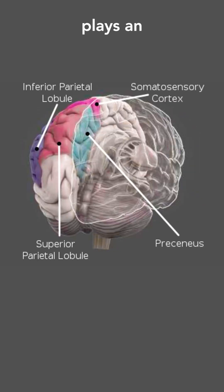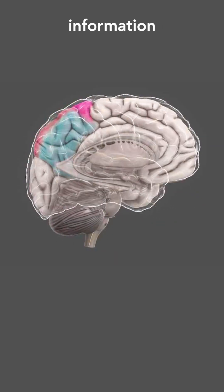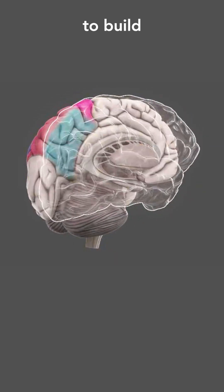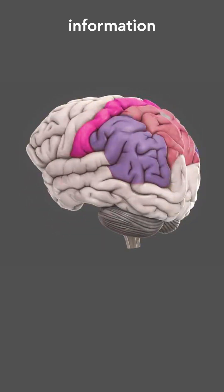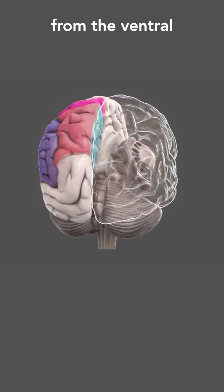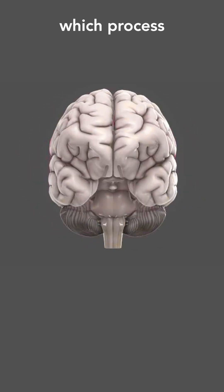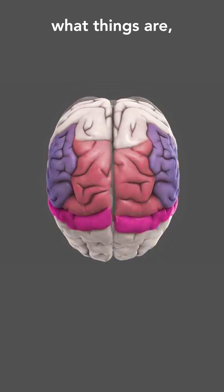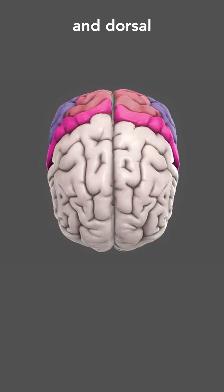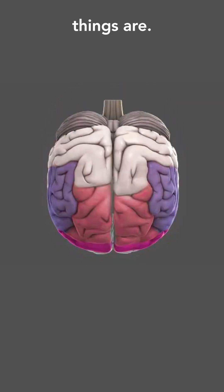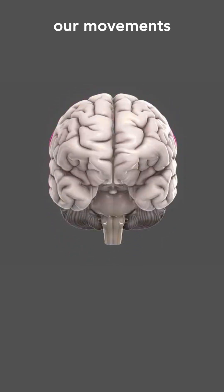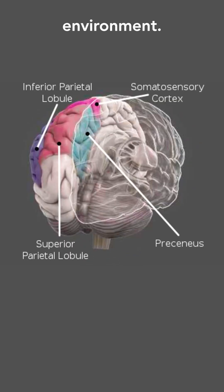The parietal cortex plays an important role in integrating information from different senses to build a coherent picture of the world. It integrates information from the ventral visual pathways, which process what things are, and dorsal visual pathways, which process where things are. This allows us to coordinate our movements in response to the objects in our environment.